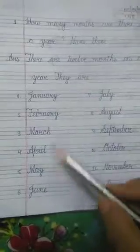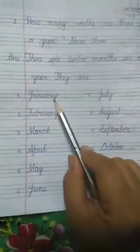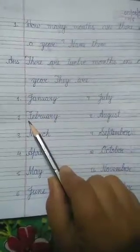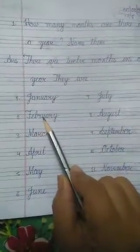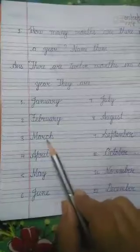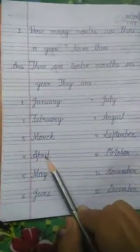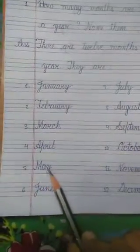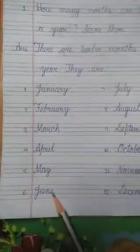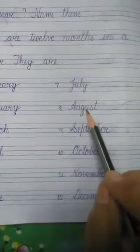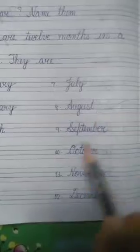They are: 1st — January, J-A-N-U-A-R-Y. 2nd — February, F-E-B-R-U-A-R-Y. 3rd — March, M-A-R-C-H. 4th — April, A-P-R-I-L. 5th — May. 6th — June. 7th — July, J-U-L-Y. 8th — August, A-U-G-U-S-T.